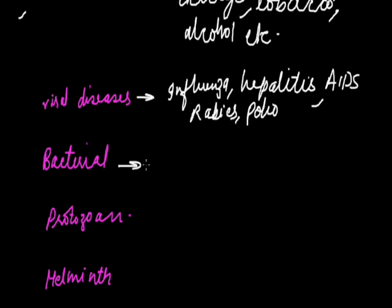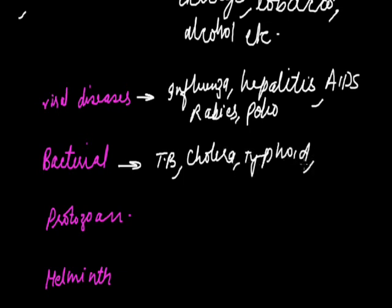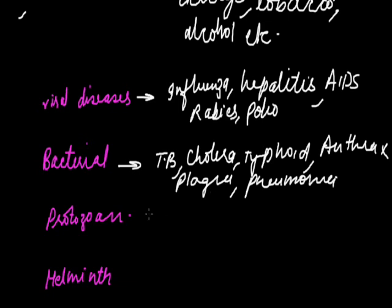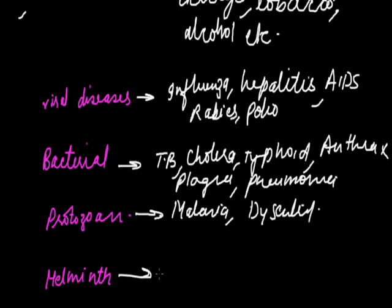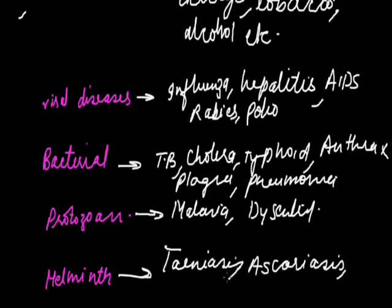Bacterial diseases include TB (tuberculosis), cholera, typhoid, anthrax, plague, and pneumonia. In the category of protozoan diseases there is malaria and dysentery. Helminth diseases caused by worms include teniasis, ascariasis, and elephantiasis.